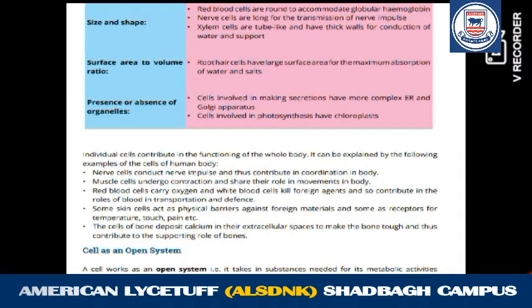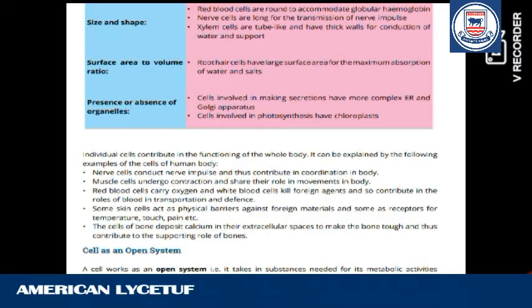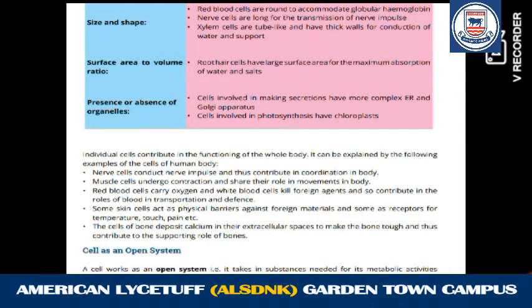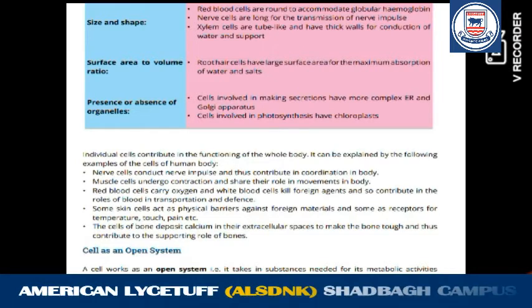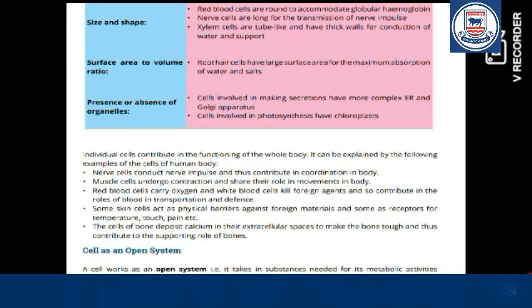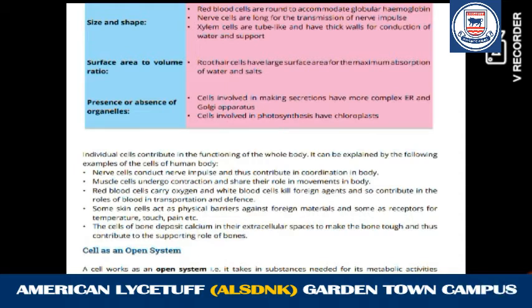Here are different types of cells and their functions: nerve cells — conduction; muscle cells — movement; red blood cells — carry oxygen; skin cells — act as a physical barrier and protect from temperature, pain etc. Cells of bone are cells in which calcium is deposited in extracellular spaces, causing compaction, making bone a compact and tough structure that supports the whole body as a skeleton. Remember these from an objective point of view.